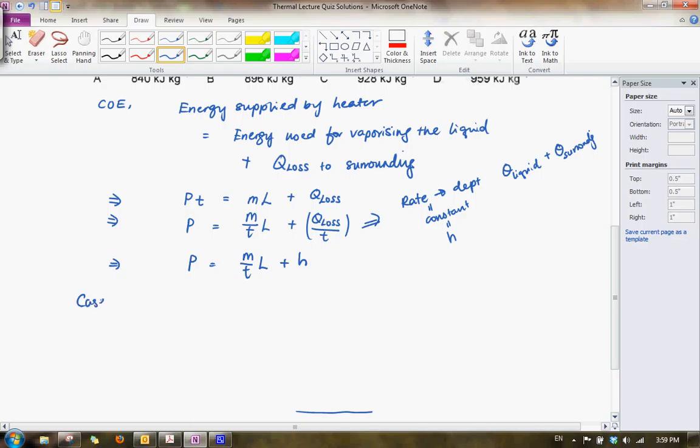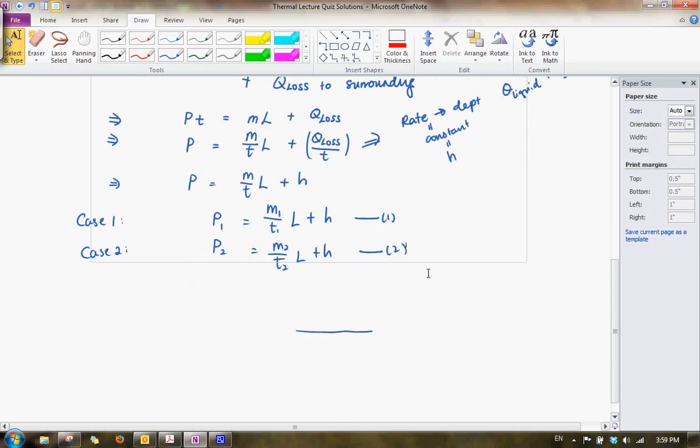So we've got two cases here. So we can write down two equations. For case one, we can just simply write P1 is equals to M1 over T1 L plus H. That I'll call it equation one. And for case two, we have P2 equals to M2 over T2 L plus H, which is two.